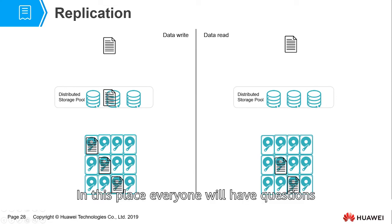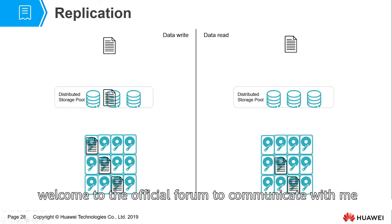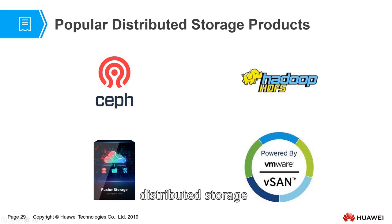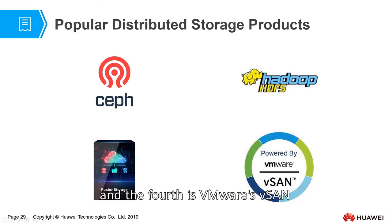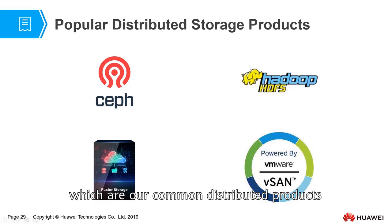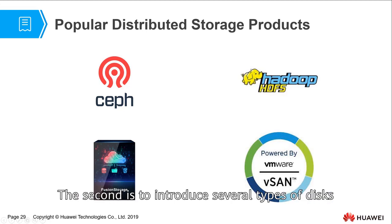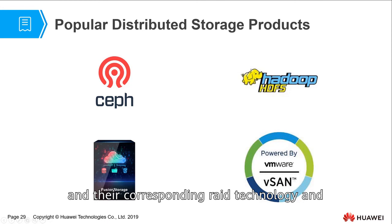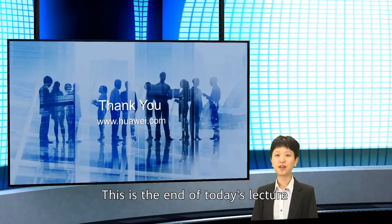Everyone may wonder why not use a parity mechanism instead. If you have ideas and answers, welcome to the official forum to discuss. Finally, here are several common distributed storage products: Ceph, which is open-source distributed storage; HDFS in Hadoop; Huawei's FusionStorage; and VMware vSAN. This lecture covered three parts: the overall storage architecture, an introduction to common disk types, and an introduction to centralized storage and distributed storage with their corresponding RAID technologies and copy mechanisms. That's the end of today's lecture. Thank you.